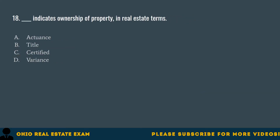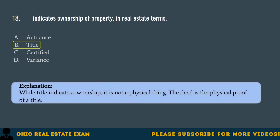Question 18. Blank indicates ownership of property in real estate terms. A. Actuance. B. Title. C. Certified. D. Variance. The correct answer is B. Title. While title indicates ownership, it is not a physical thing. The deed is the physical proof of a title.